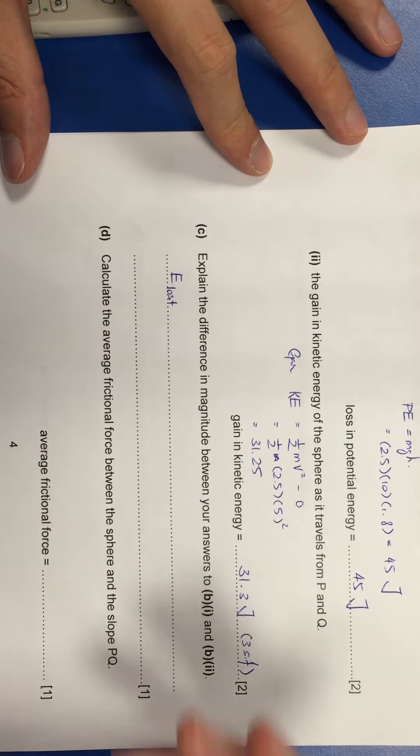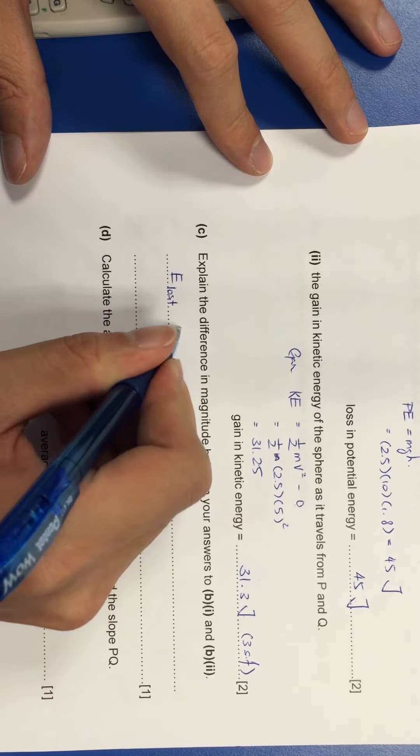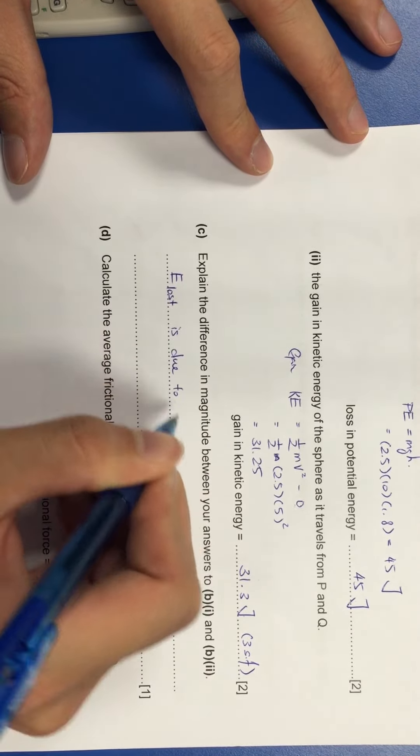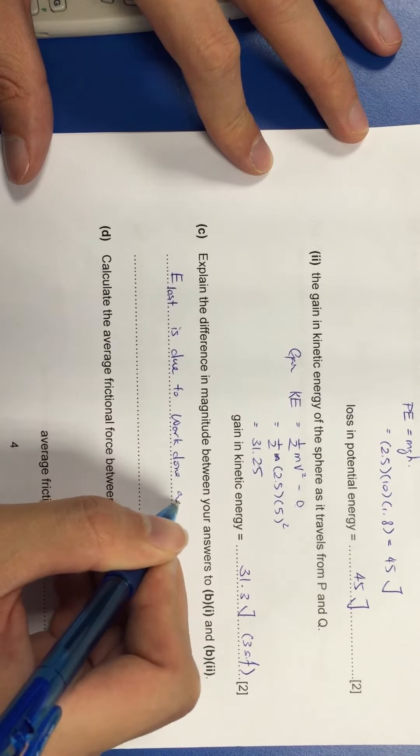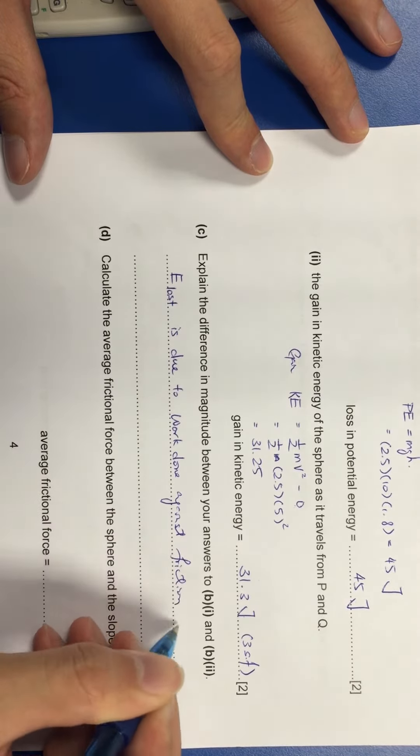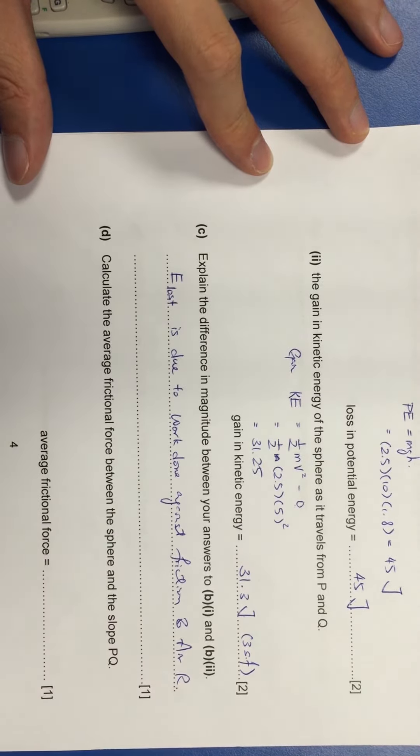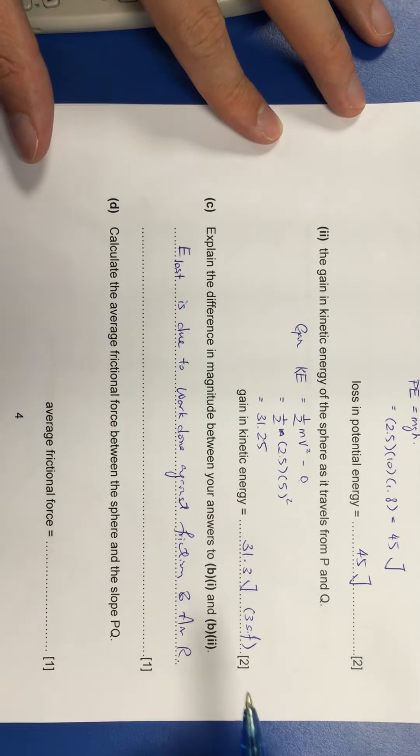So in this case, I didn't consider friction in here. So I can say that the energy loss is due to work done against friction and air resistance. Now the common mistake among students is that they will just say, oh, energy loss due to friction.